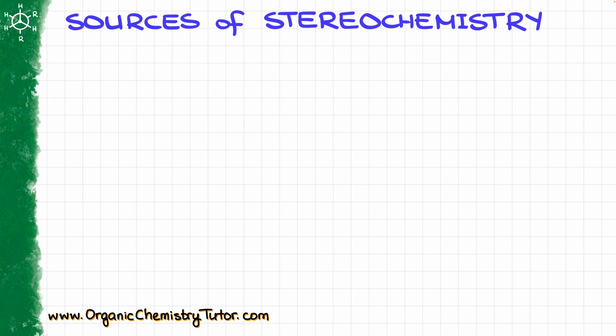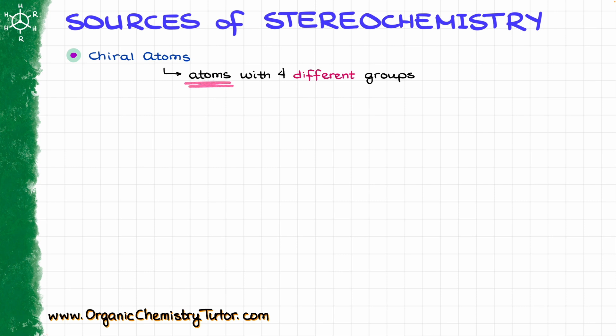The first source of stereochemistry I'm going to talk about is chiral atoms. When we are talking about chiral atoms, it's going to be atoms with four different groups. Within the scope of organic chemistry, we are going to be looking at atoms with four different groups. Most of the time they are going to be carbons, but we could potentially have other atoms as well — chiral nitrogens, chiral phosphorus, sulfur, or even other atoms.